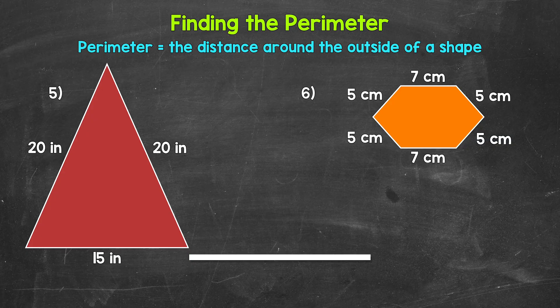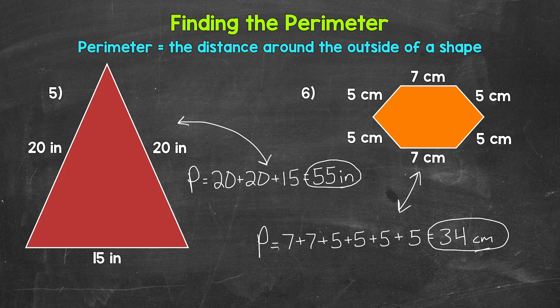All right, so let's check our work here and see how we did. For number five, the perimeter is 55 inches. For number six, the perimeter is 34 centimeters. And remember, it doesn't matter what order we add the side lengths in. So if your work is different than mine, that's okay. As long as all of the side lengths are included and you got the correct perimeter, that's what matters.